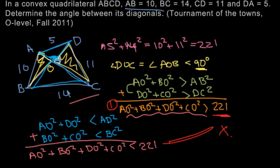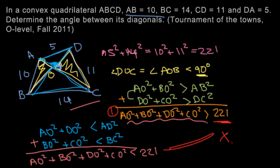So our original claim that said that this angle DOC is less than 90 degrees is false. And it's going to be the same if you assume that it's greater than 90 degrees. So they can't be less than 90 degrees, they can't be greater than 90 degrees. So these angles, the angle between the diagonals must be 90 degrees.